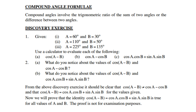Now we will prove that identity. We are going to prove that cos(A minus B) equals cos A times cos B plus sin A times sin B is true for all values of A and B. The proof is not for examination purposes, but we are going to do it on the next page.